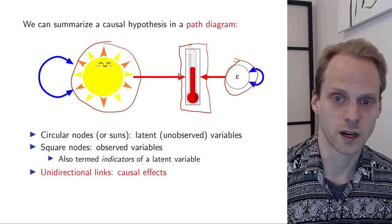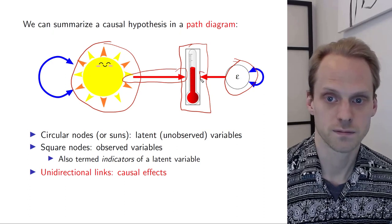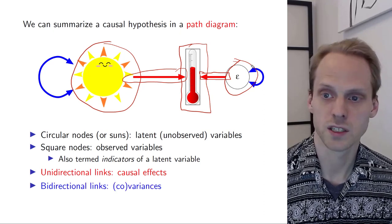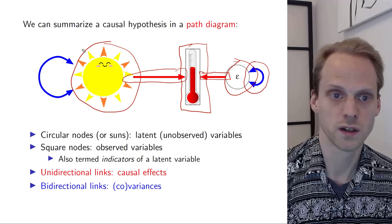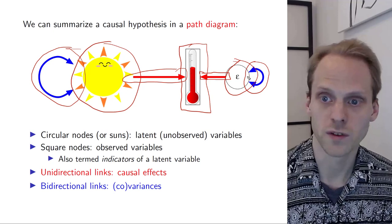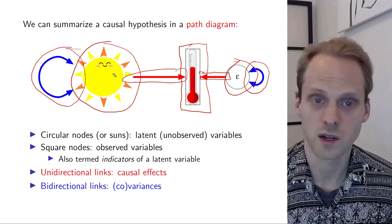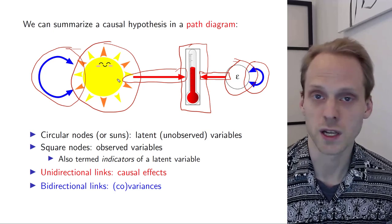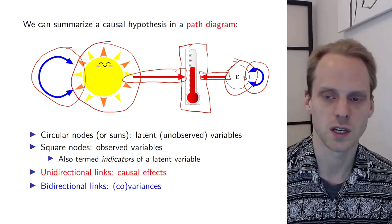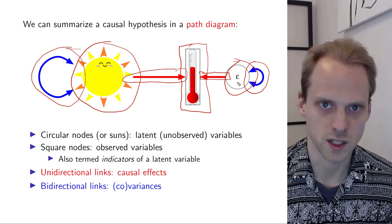Unidirectional arrows — those with only one direction — indicate causal effects, and we have two here. Bidirectional arrows indicate variances or covariances. These are very important on the latent variables because there must be an actual variance in temperature; temperature differs over places or over time. Likewise, the residual error should also have a variance. If you have no variance there, you just have a constant bias and there's not much you can do with it.